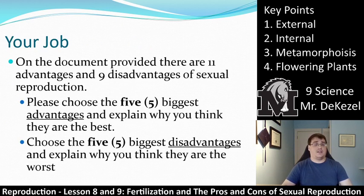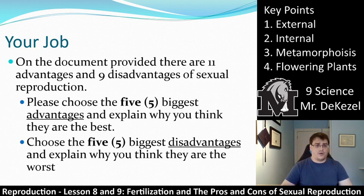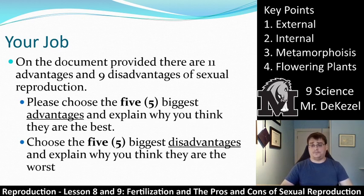I'd like you to read the document provided, which lists 11 advantages and 9 disadvantages of sexual reproduction. Similarly to before, choose the 5 biggest advantages and 5 biggest disadvantages and explain why you think they are that way. It's really important to be able to differentiate between important and unimportant factors when talking about asexual and sexual reproduction. If you have any questions, please let me know. Thanks very much for watching, everyone — I will see you soon.